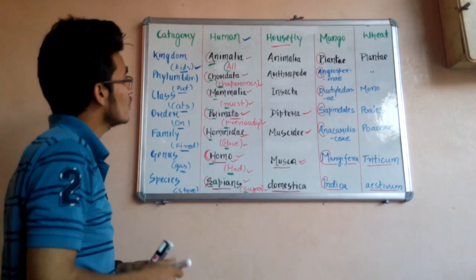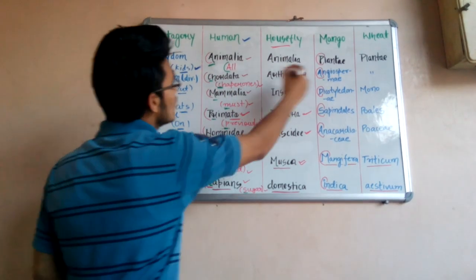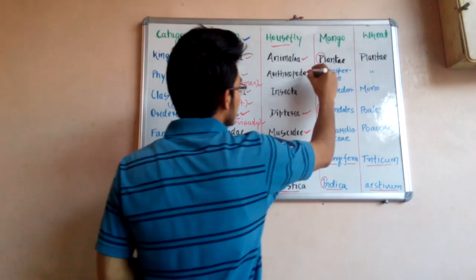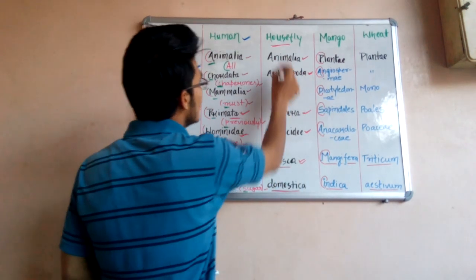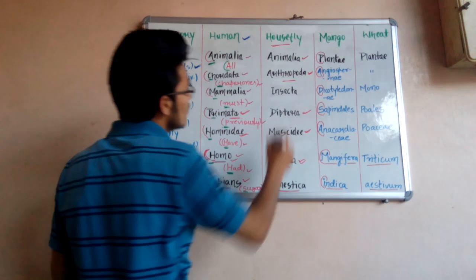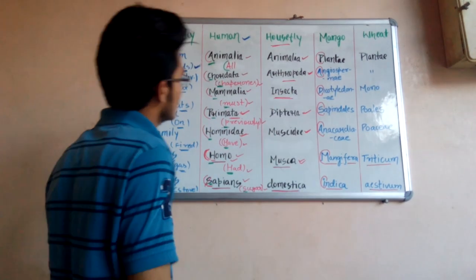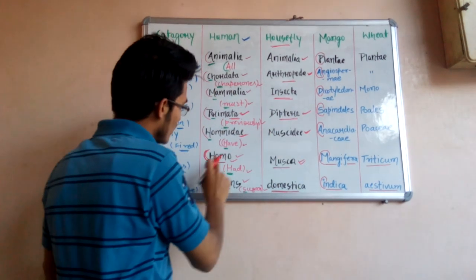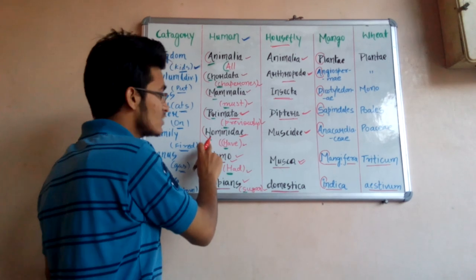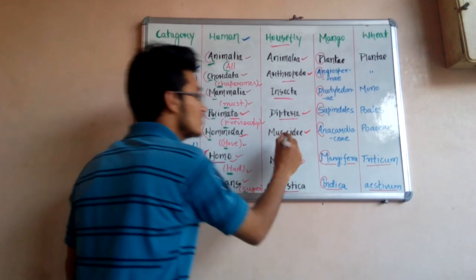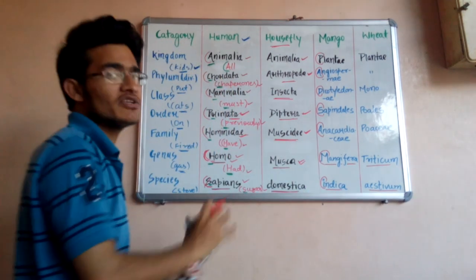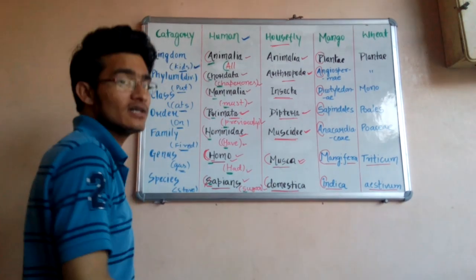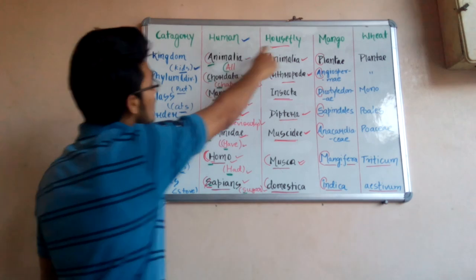Now we correlate the human hierarchy with the housefly. Housefly also belongs to Animalia. All insects in our surrounding belong to Phylum Arthropoda — so while humans have Chordata, housefly has Arthropoda. Housefly is an insect, so the Class is Insecta. The Order is Diptera, the Family is Muscidae, and the Genus is Musca. The scientific name of housefly is Musca domestica.